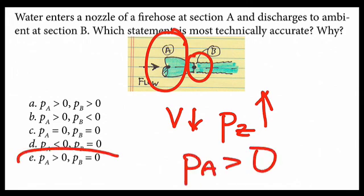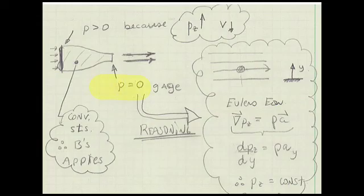So the correct answer is answer E. To explain why the pressure is zero gauge, the key thing to notice is that I start with something known, which is Euler's equation, and I explain why based on Euler's equation. And to understand this, I'll refer you back to the textbook section on Euler's equation.